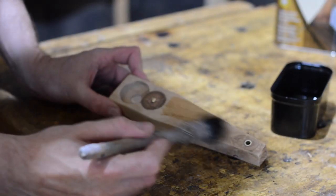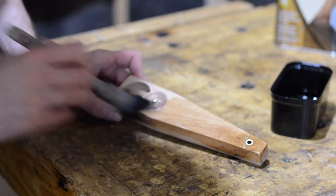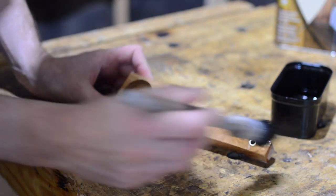I sanded and filed the brass rod flush, but who needs more footage of sanding? And then I finished everything with some Danish oil.